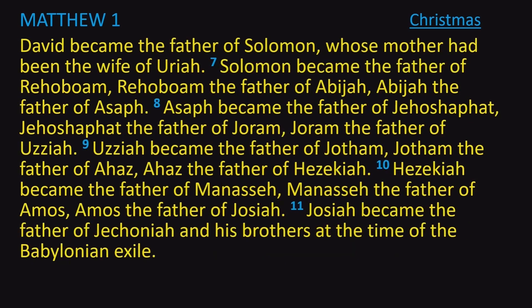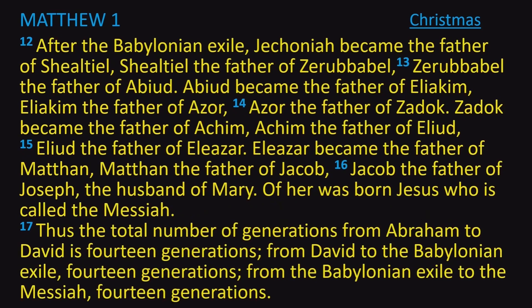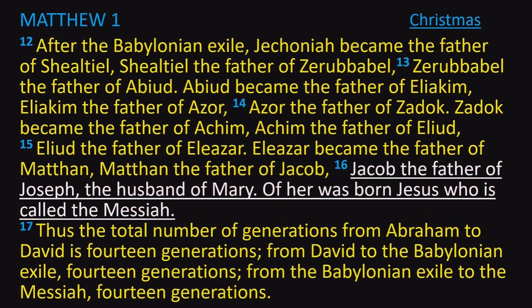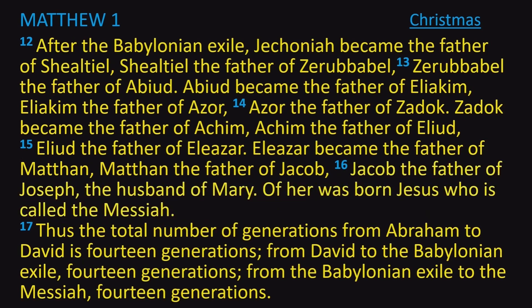Then it continues with David becoming the father of Solomon. It continues from here down through to the time of the Babylonian exile that we've studied so much about in the past. After the Babylonian exile, the list continues down to verse 16: Jacob, the father of Joseph, the husband of Mary, of whom was born Jesus, who is called the Messiah. Thus, the total number of generations from Abraham to David is 14 generations, from David to the Babylonian exile is 14 generations, and from the Babylonian exile to the Messiah is 14 generations.